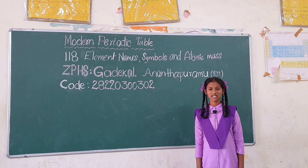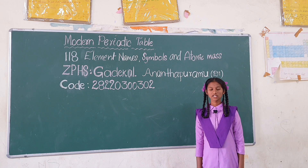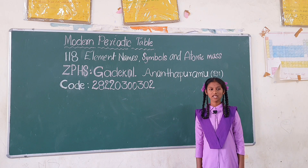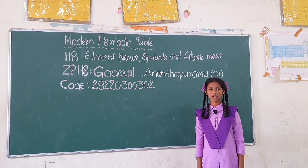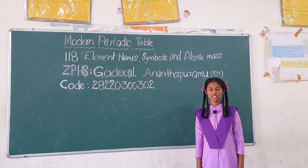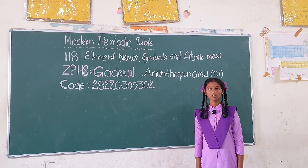Rubidium Rb 85.47, Strontium Sr 87.62, Yttrium Y 88.91, Zirconium Zr 91.22, Niobium Nb 92.91, Molybdenum Mo 95.96, Technetium Tc 98.98, Ruthenium Ru 101.1, Rhodium Rh 102.9, Palladium Pd 106.4, Silver Ag 107.9, Cadmium Cd 112.4.